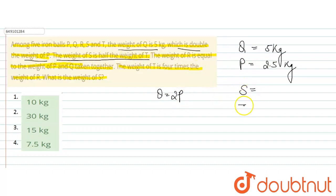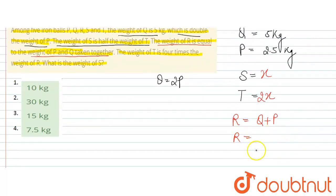S's weight is equal to weight of P and Q taken together. So weight of R is Q plus P. So R's weight is equal to 7.5 kg.